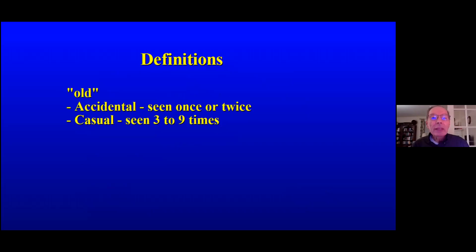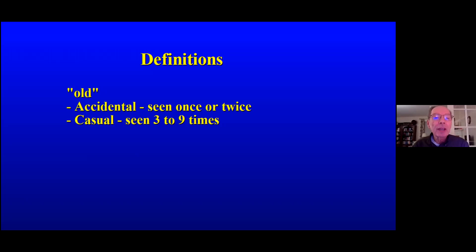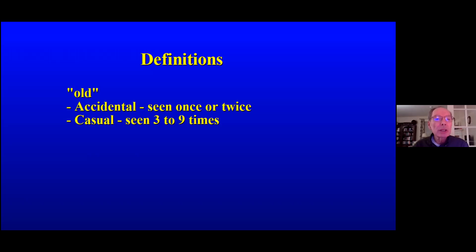The definitions that have traditionally been used for years is that 'accidental' is something seen very few times — once or twice — and 'casual,' sometimes called 'rare.' The words accidental and casual are not universally used; accidental might be called a vagrant, casual might be called rare. The words vary from author to author and book to book, but inevitably it has to do with how many times a bird was seen in a state or county.